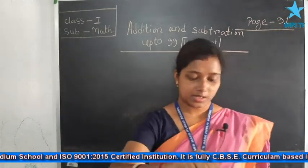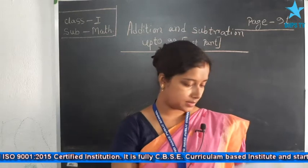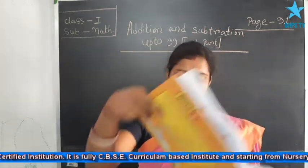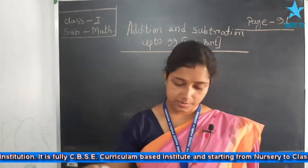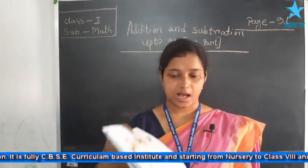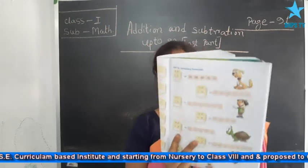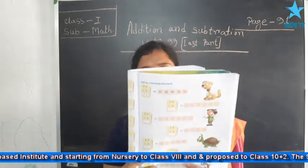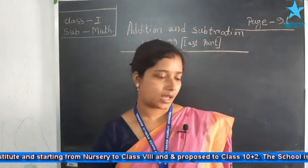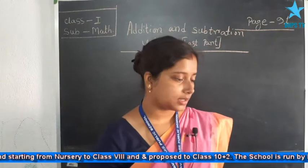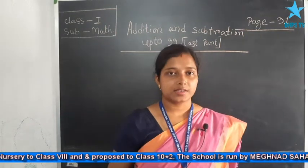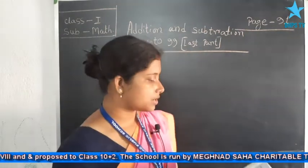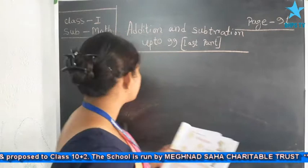Next, turn the page to page number 93. Here the topic is: add by counting forward.